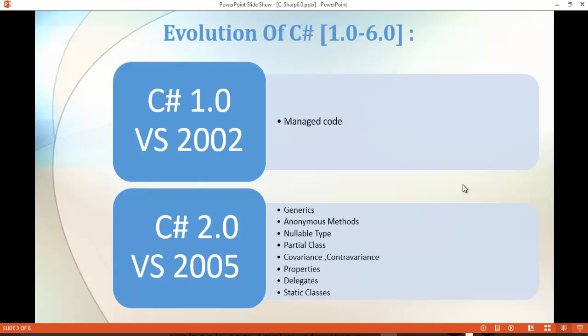Here comes the first version, C-Sharp 1.0, released with Visual Studio 2002. It came up with the feature called Managed Code. Since it was the first version, it came up with all the necessary features which a basic programming language should have. That's the specialty of C-Sharp version 1.